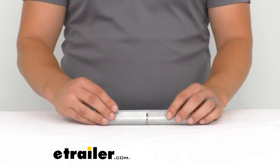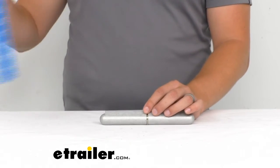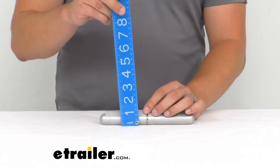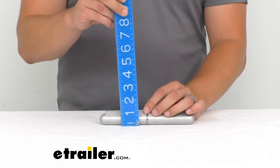So for our overall height from the bottom to the top of that kind of raised triangular portion, that is going to be one and one eighth of an inch.